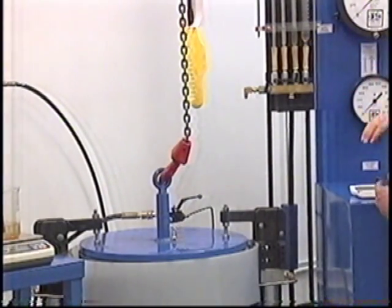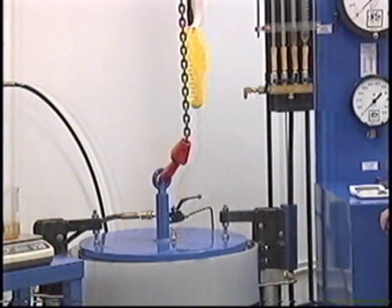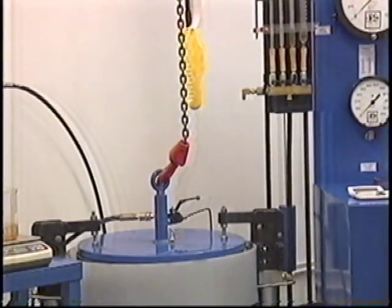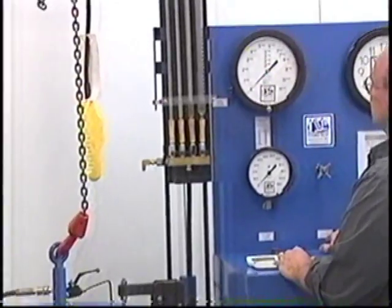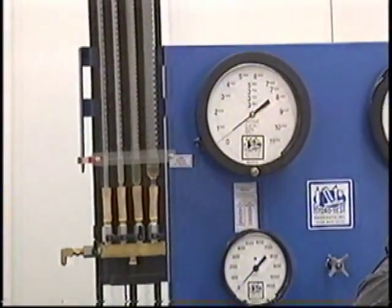Again we get that slight rise of expansion, which is the city water pressure. That is the beginning of the test. You do not want to disturb that. At this point we are going to then just go right up to 5000 psi on our pressure gauge.